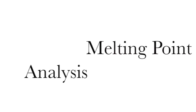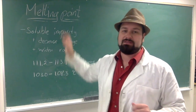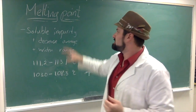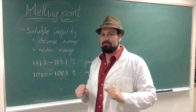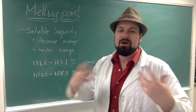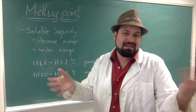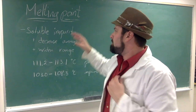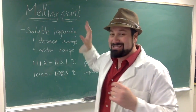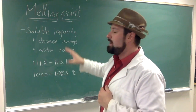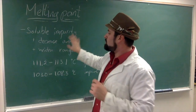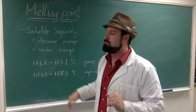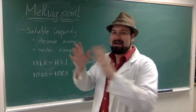What do you need to know for today for melting point analysis? One, this only affects soluble impurities. If you have a soluble impurity — one that dissolves — as opposed to something like glass or metal, it's not going to dissolve in an organic compound. But if you have something soluble, like another organic compound, and you introduce it, two things are going to happen: one, it's going to decrease the average melting point, and two, it's going to widen that range.